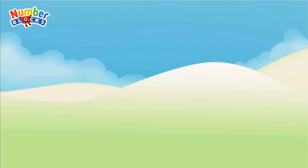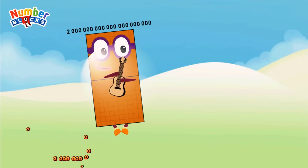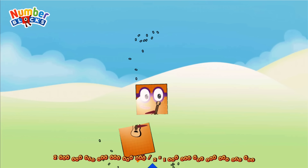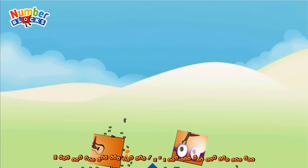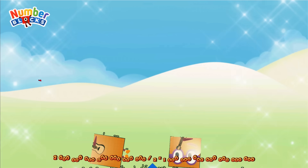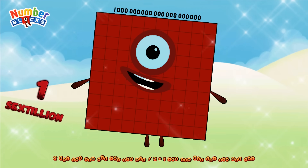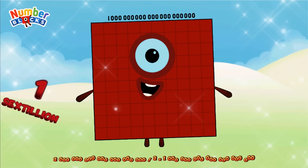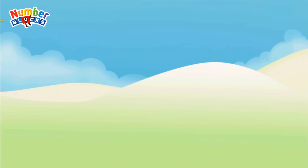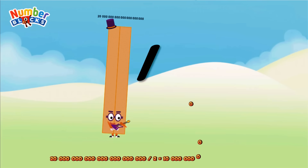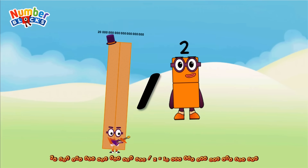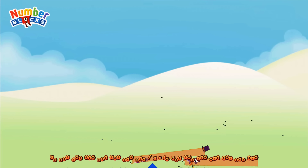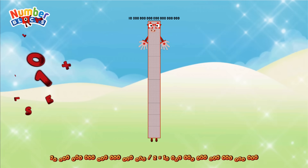2 sextillion divided by 2 equals 1 sextillion. 20 sextillion divided by 2 equals 10 sextillion.